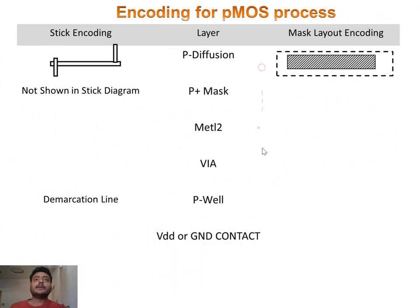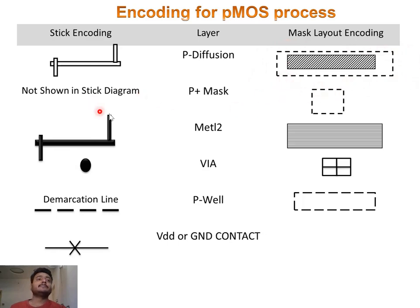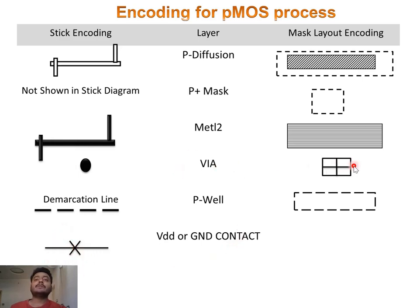Similarly for the PMOS process, the encoding is much similar. The only addition is that you can find the well region indication — that is the mask encoding, which is the P+ mask. You can also see the demarcation line and the well boundary as mentioned before. The contact is indicated accordingly, and this is how you indicate the VIA — we will discuss VIA in detail in the later part.